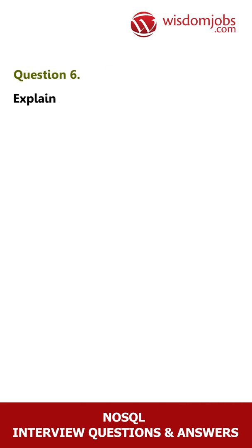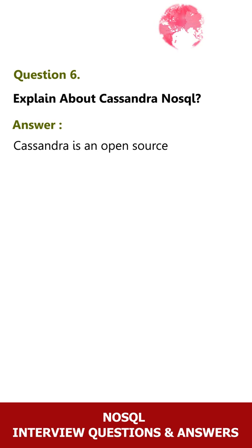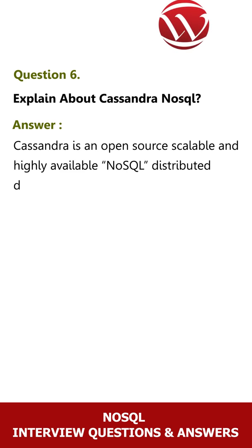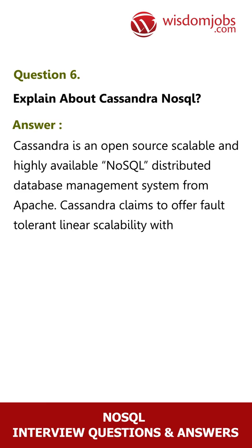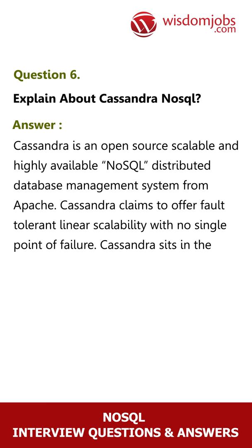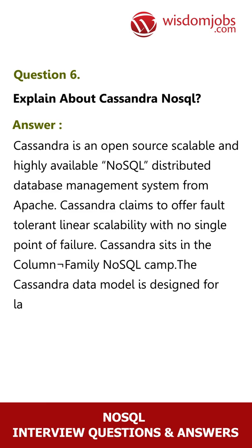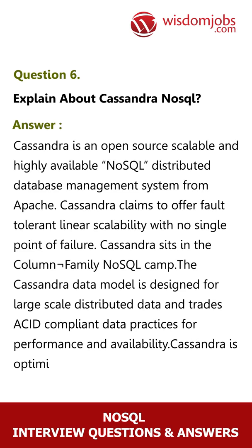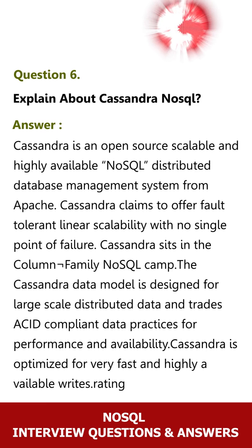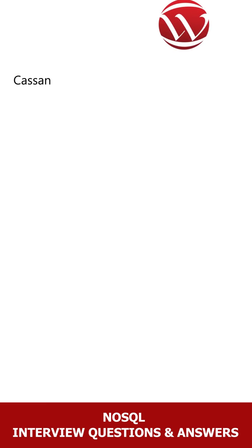Question 6: Explain about Cassandra NoSQL. Answer: Cassandra is an open source, scalable, and highly available NoSQL distributed database management system from Apache. Cassandra claims to offer fault-tolerant linear scalability with no single point of failure. Cassandra sits in the column family NoSQL camp. The Cassandra data model is designed for large-scale distributed data and trades ACID-compliant data practices for performance and availability. Cassandra is optimized for very fast and highly available writes.